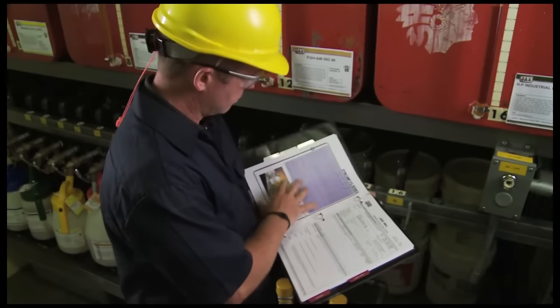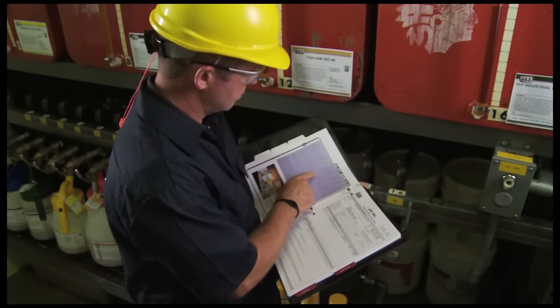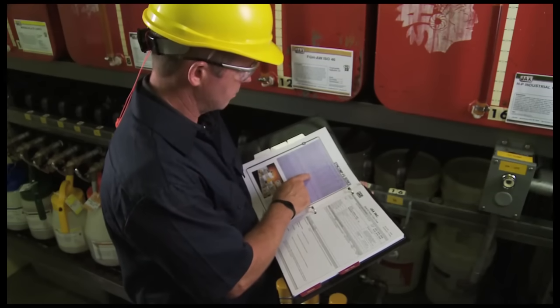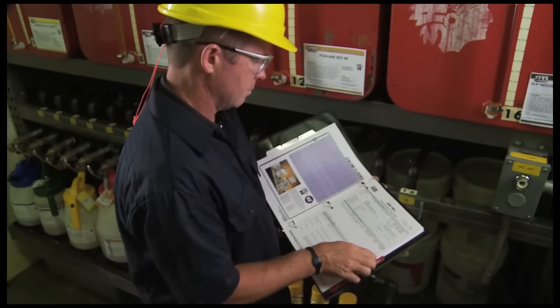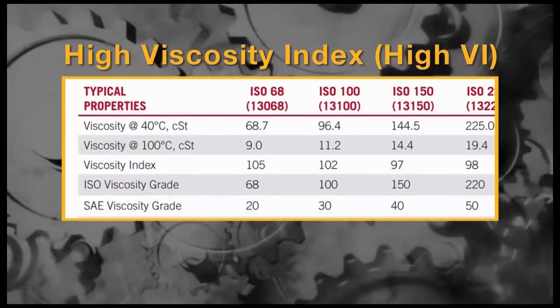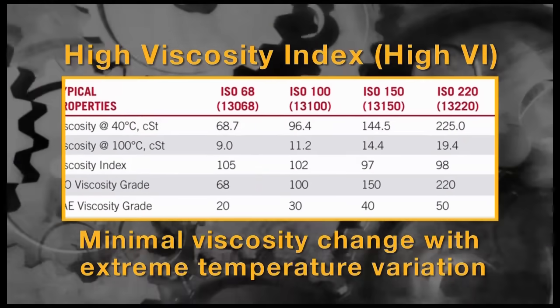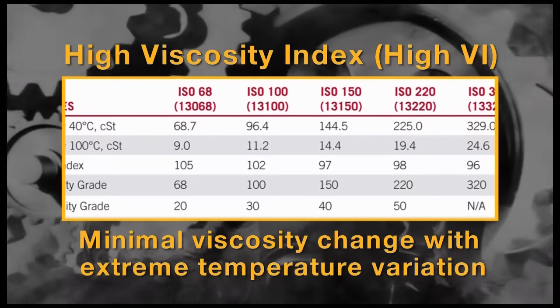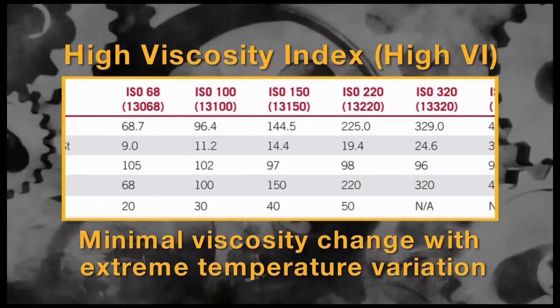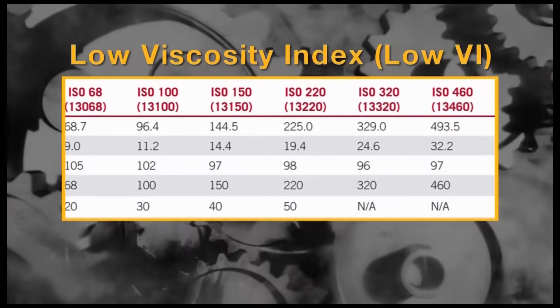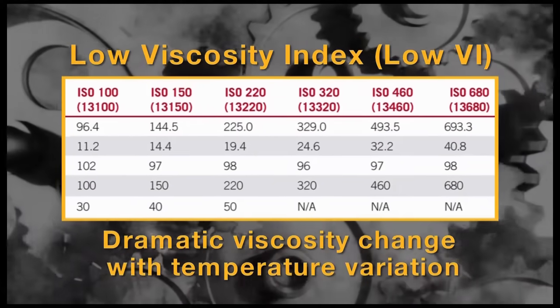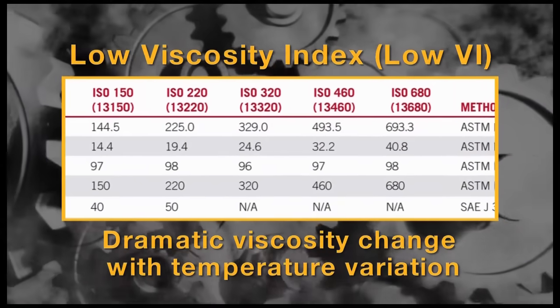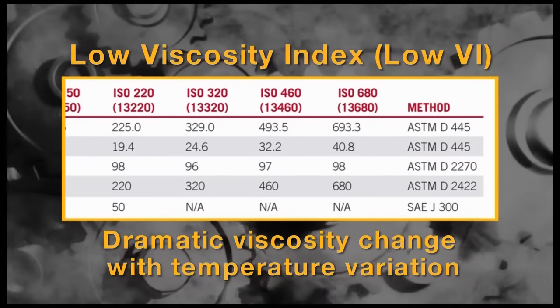The viscosity index, or VI, indicates how a lubricant's viscosity changes with variation in temperature. A high viscosity index indicates the oil will have minimal viscosity change with extreme temperature variation. A low viscosity index indicates the oil's viscosity will have dramatic viscosity changes with extreme temperature variation.